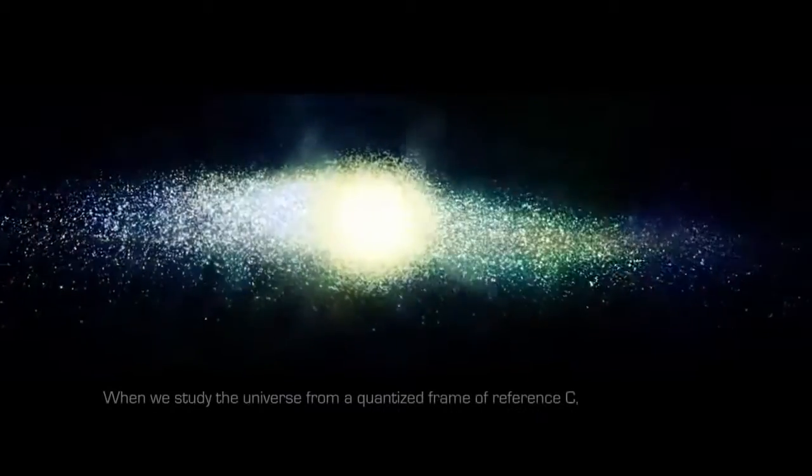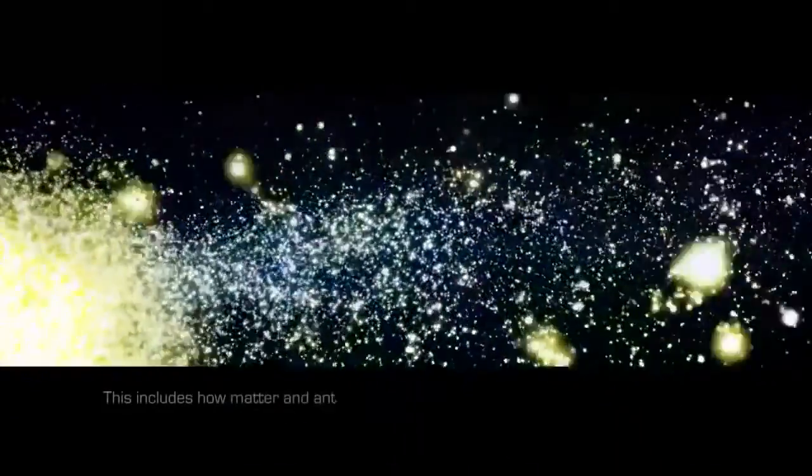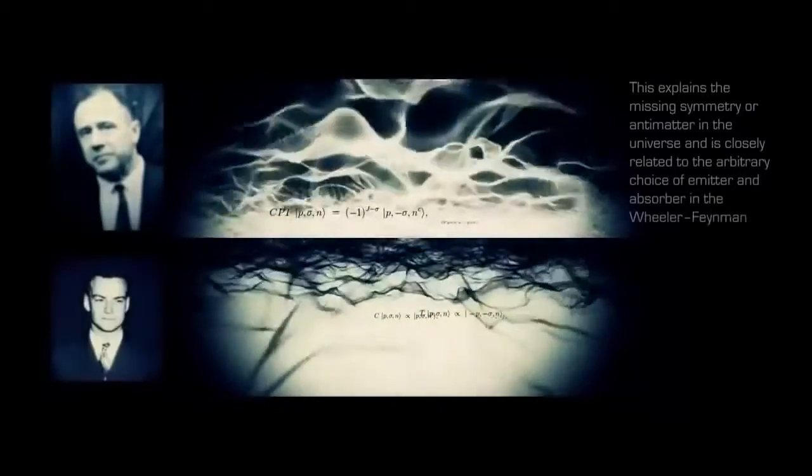When we study the universe from a quantized frame of reference C, we have to take into account all experimental evidence that applies to quanta. This includes how matter and antimatter are created simultaneously in particle accelerators, and how mesons switch back and forth between one and the other. This has significant consequences when applied to C. From a quantum perspective, every instance of C has an anti-C. This explains the missing symmetry or antimatter in the universe and is closely related to the arbitrary choice of emitter and absorber in the Wheeler-Feynman time symmetric theory.